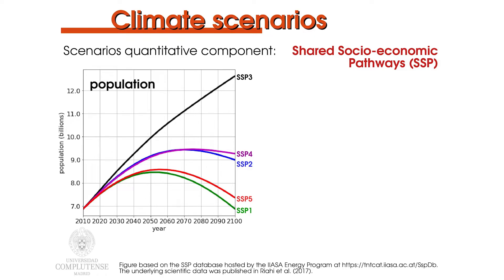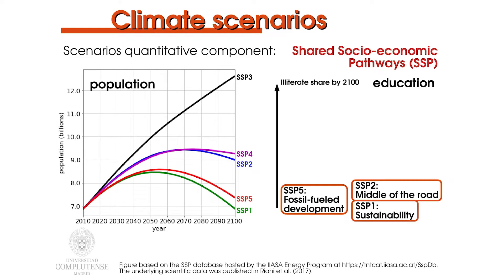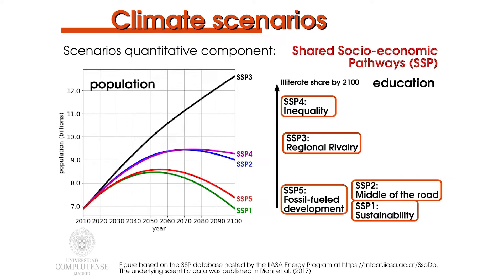Conversely, population is highest for SSP 3 with 12.6 billion by the end of the century, while SSP 2 and SSP 4 depict an intermediate scenario for population growth. As for education, which has important implications for economic growth and vulnerability, it varies between scenarios, with global improvements in SSP 1, 5 and 2, while increases in SSP 3 and especially SSP 4 are small and even decline late in the century.